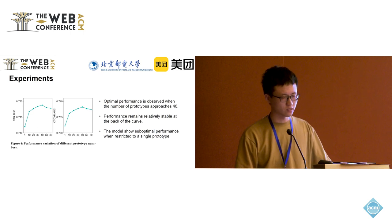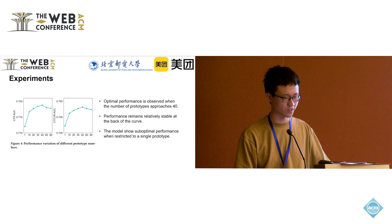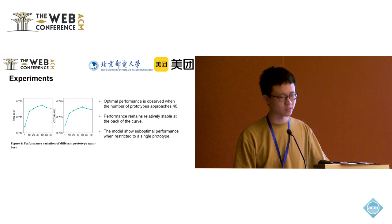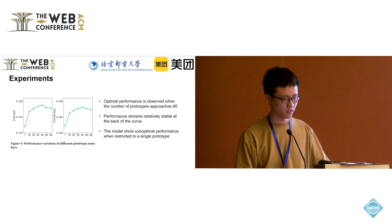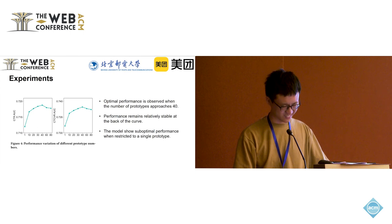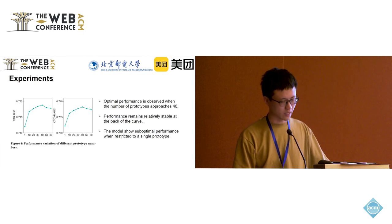The number of prototypes is a hyperparameter in our proposed method. We evaluate the effectiveness of prototypes by altering their number. The model performs best when the number of prototypes reaches 40, and performance remains relatively stable beyond that, suggesting robustness when the number of prototypes exceeds a certain threshold. The model has its poorest performance when the number of prototypes is set to 1, indicating that a significant drop in effectiveness occurs due to already-filtered sequences.